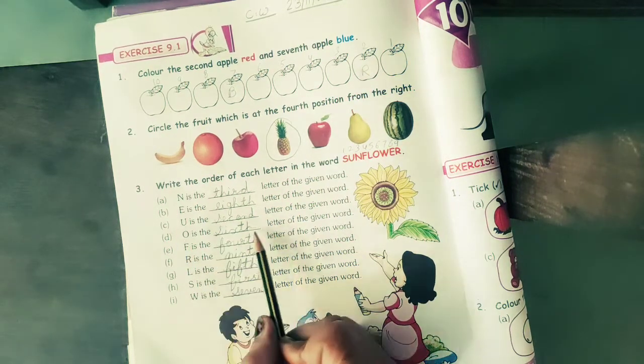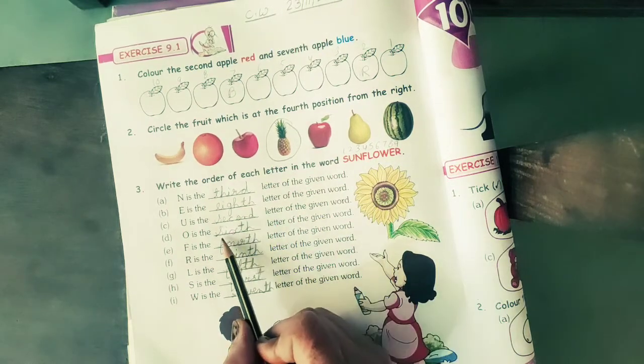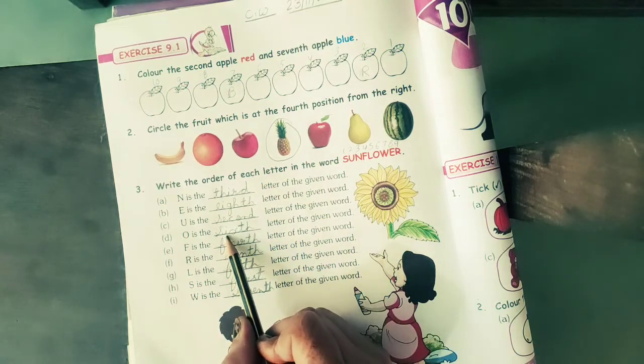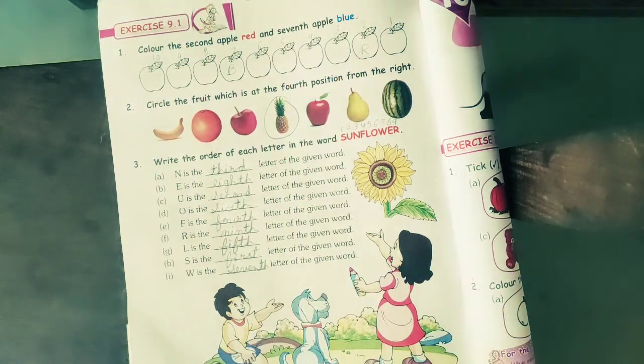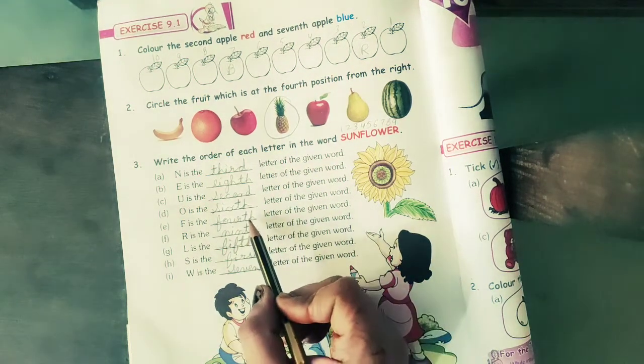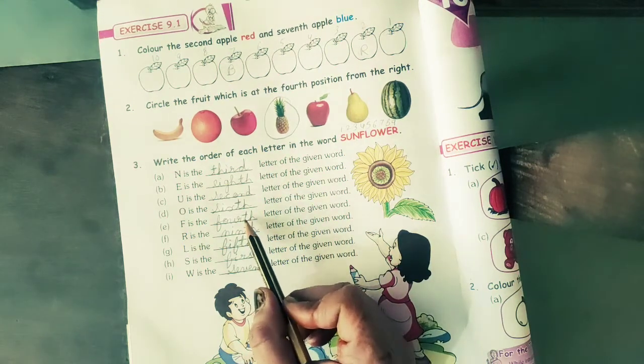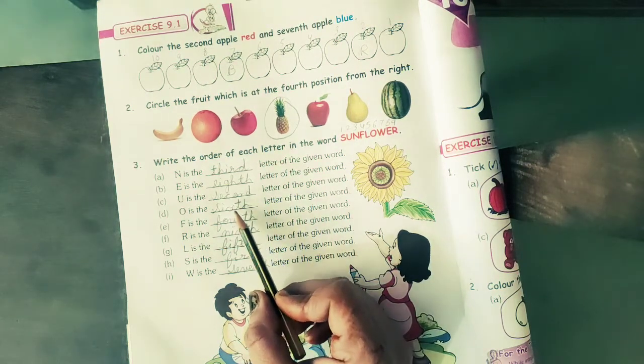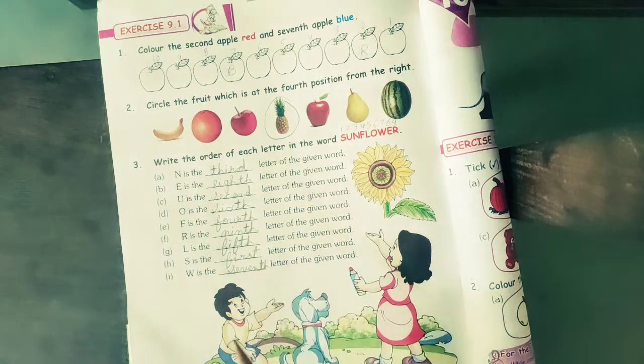O is the letter of the given word. O is at six number position. Spelling of six is S, I, X. These are the given letters of the order. We have written ordinal numbers.